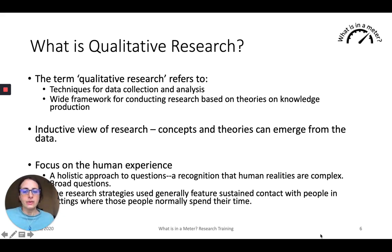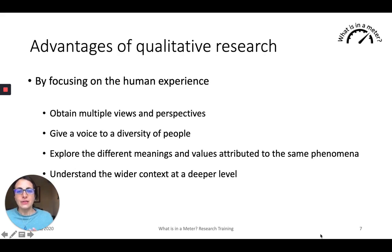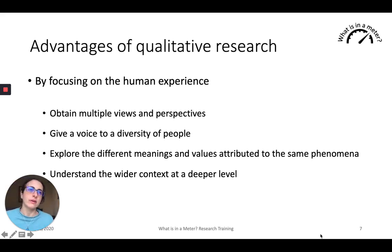An important principle is the idea of focusing on the human experience, which is crucial in qualitative research — recognizing the complexity in human realities, what people experience and what they understand. The best way to do this is to interact with people as much as possible, even spend time with them, and begin to understand their realities in an in-depth way. The advantages of qualitative research, by focusing on the human experience, is that we gain a better, more in-depth understanding of a wide problem at a deep level, and we understand the multiple views and perspectives pertaining to a particular phenomenon, or perhaps a social problem.